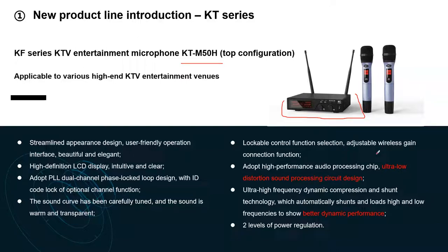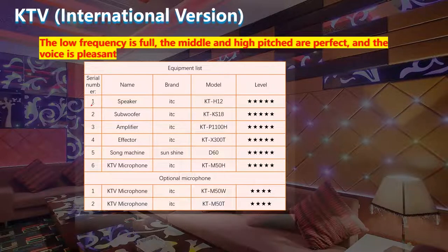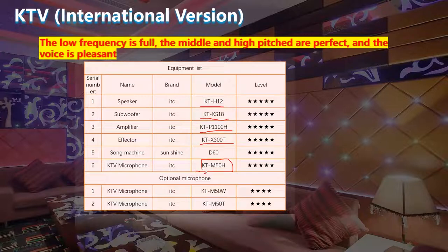The KT-M50 is also for singing, and its receiver is very small — suitable for small rooms with limited storage space. It has ultra-low distortion sound processing circuit design with better dynamic performance. These are the product lists we usually apply for KTV: speakers like KT-H12, subwoofers for low frequency sound, amplifier, E-factor, the KTV machine for ordering sound and BGM, KTV microphone, and the 50H for small rooms. Optional types include Level B Deluxe edition with one more subwoofer, and Level C Classic edition with more full frequency speakers.